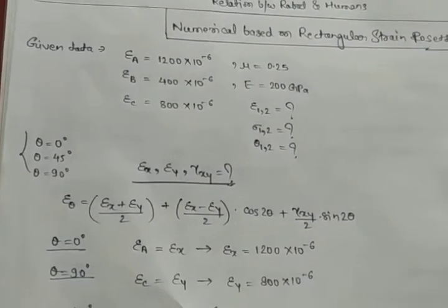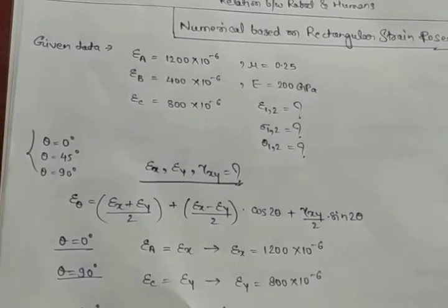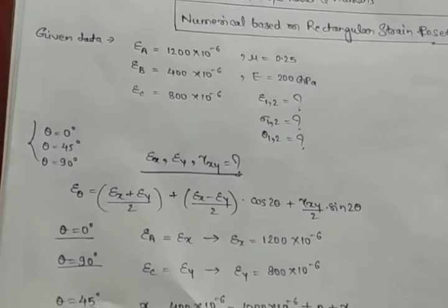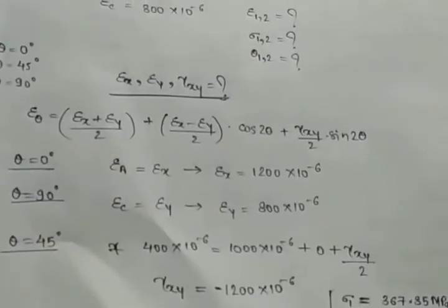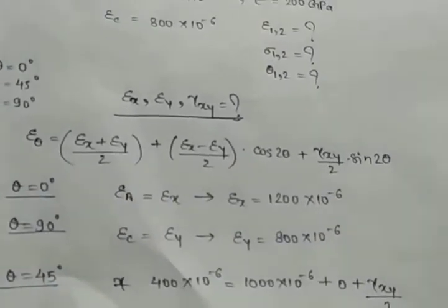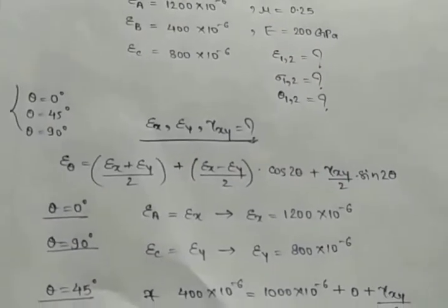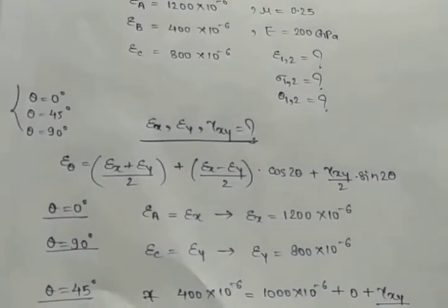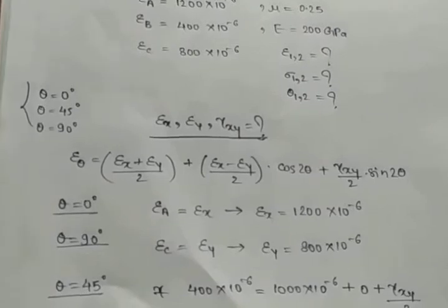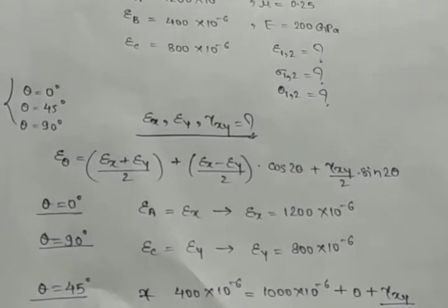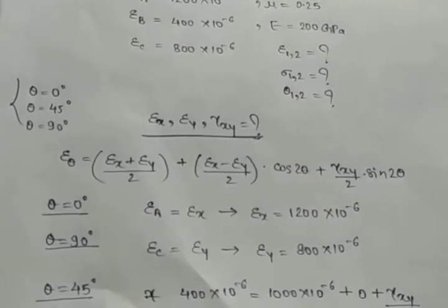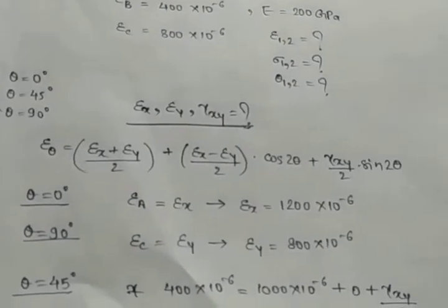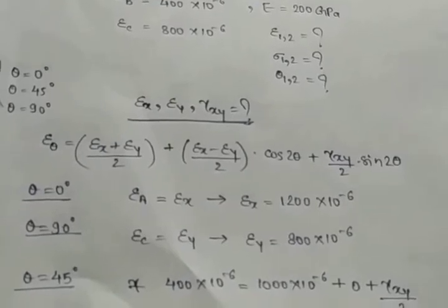You can apply the direct formula if you wish. Otherwise, we use: epsilon_theta = (epsilon_x + epsilon_y)/2 + (epsilon_x − epsilon_y)/2 × cos(2θ) + (gamma_xy/2) × sin(2θ). We will use this formula for all three gauge angles.